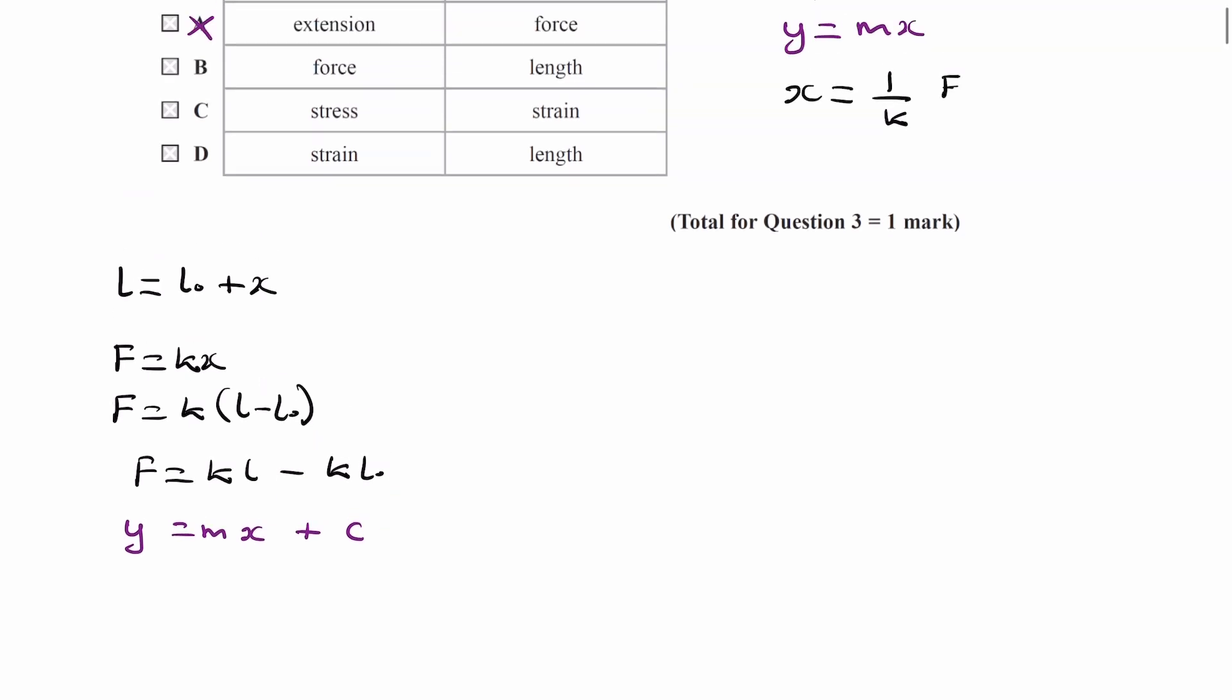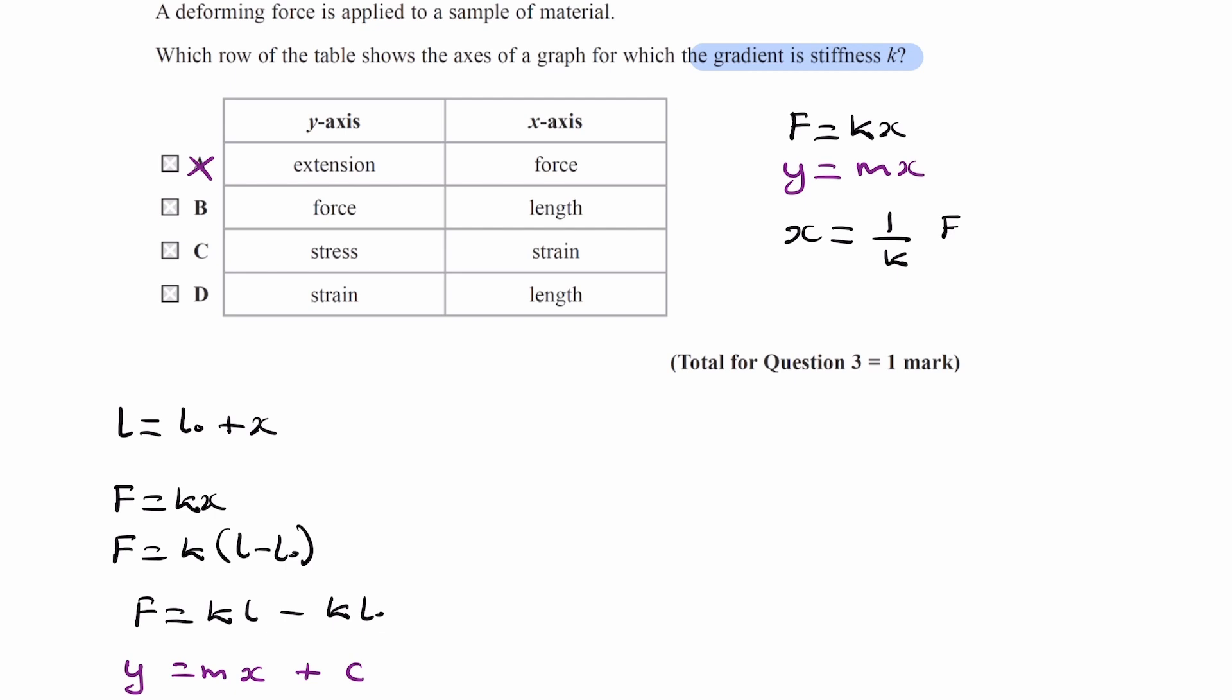So actually, plotting force against length would work. That would give us a straight line. The gradient would be stiffness. So it is option B.